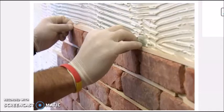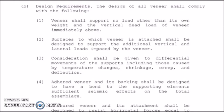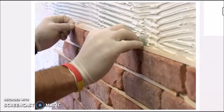Here is an example showing how veneer is installed. For the design requirements of veneer, it shall comply with the following: first, veneer shall support no load other than its own weight and the vertical dead load of veneer immediately above it. Just like the photo shown, the brick veneer shall not support any load other than its own weight and the weight of the brick directly above it.